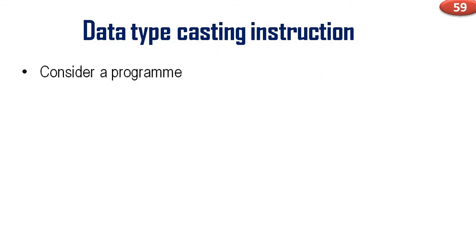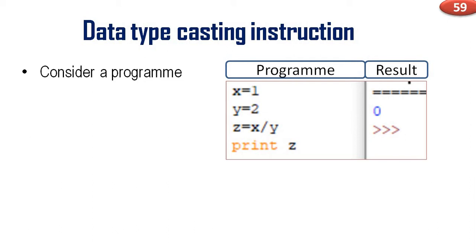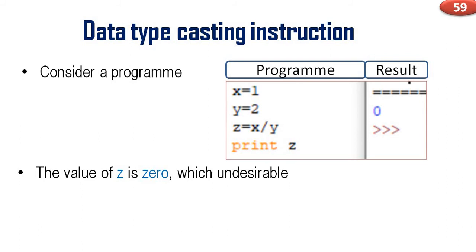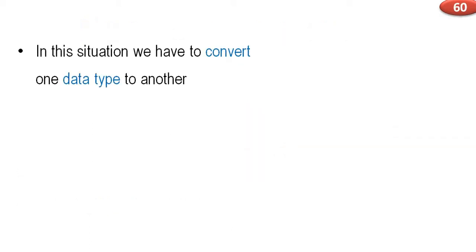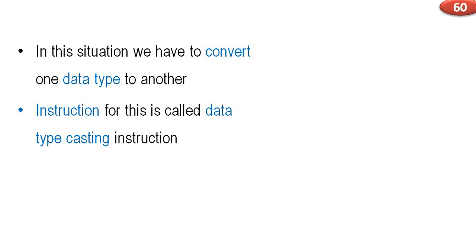Data typecasting instruction — consider a program: x = 1, y = 2, z = x / y, print z. We know that 1 divided by 2 is 0.5, but we will get the answer zero. The value of z is zero instead of 0.5, which is undesirable. This zero is actually a truncated integer of 0.5. So we need to solve this problem by converting one data type to another — this instruction is called data typecasting instruction.